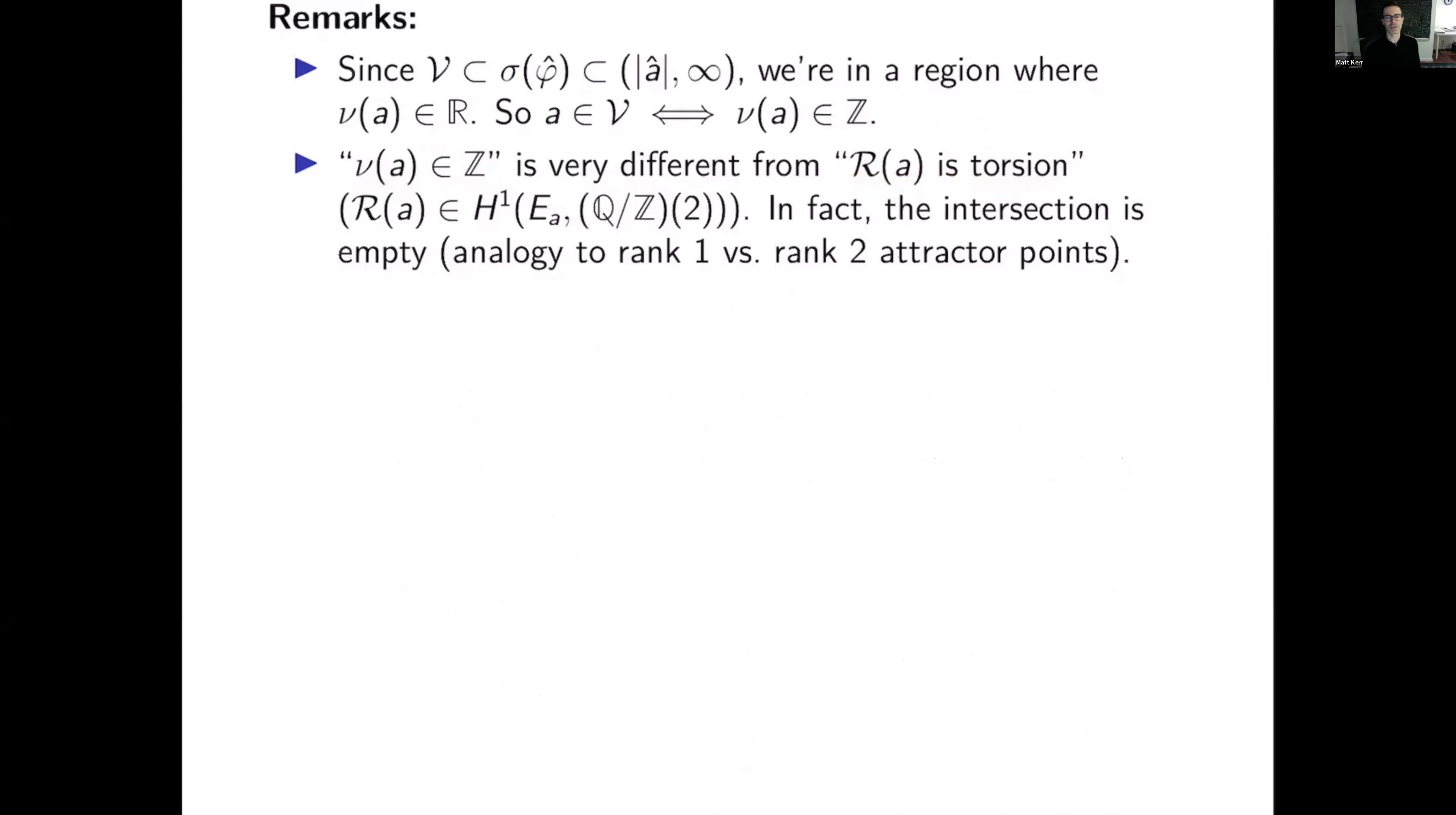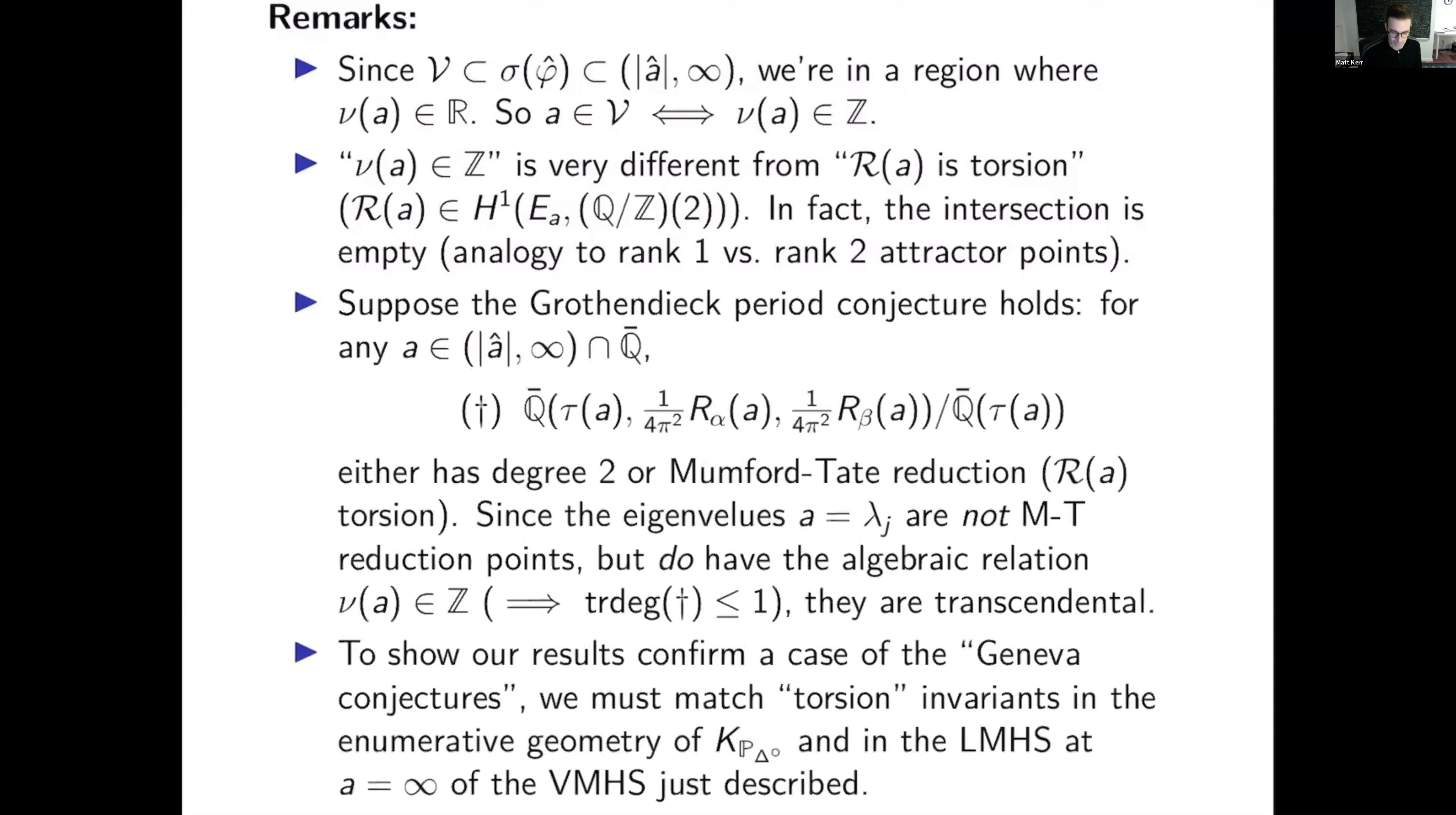To say the regulator class is torsion is to say that it's in H1 with coefficients in 2 pi i squared Q mod Z. And one should view the difference between this and this as like rank one attractor points and rank two attractor points. It's the mixed analog of that. So there's no intersection between those two things. I'm saying this partly because the r of a is torsion is what you get in some analyses. I'm thinking in particular of an old paper of Sergei Gukov and Shulkowski that showed in some settings that the regulator class or indeed the K2 class being torsion was supposed to correspond to in the world of the WKB approximation being in the spectrum.